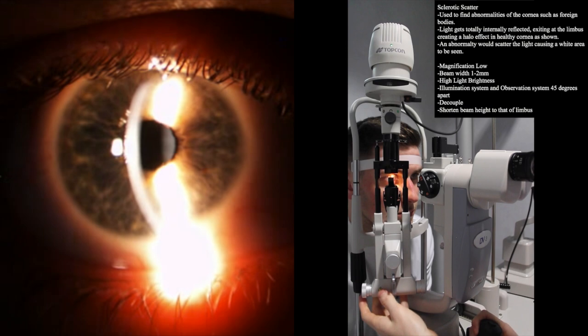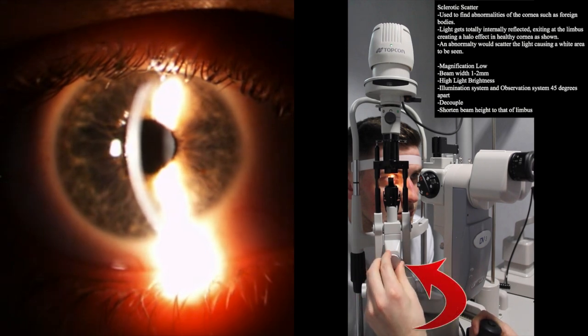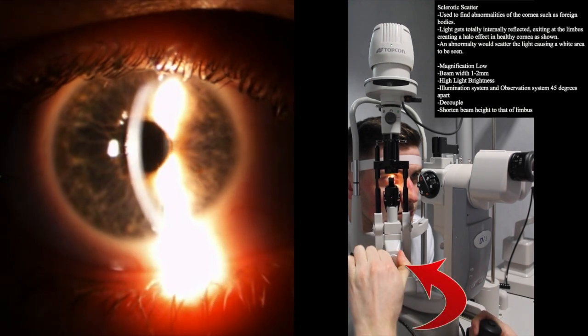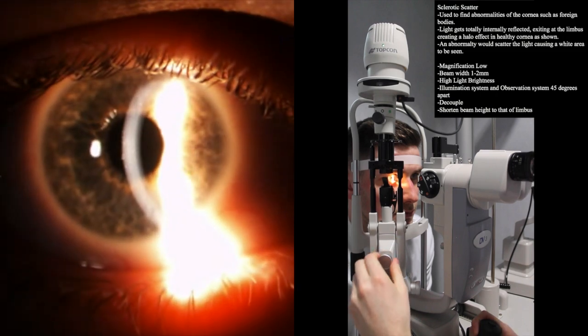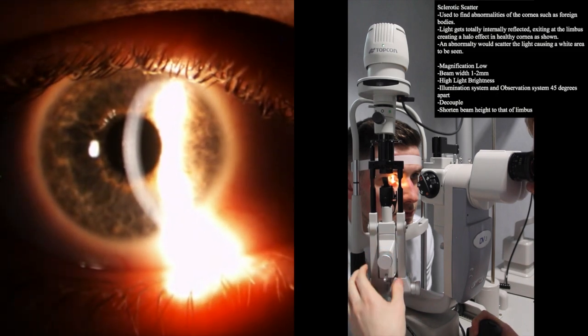To decouple a high stripe slit lamp, you twist this knob on the illumination system anti-clockwise to loosen it. This will allow the beam to be decoupled onto the temporal edge of the cornea as shown.